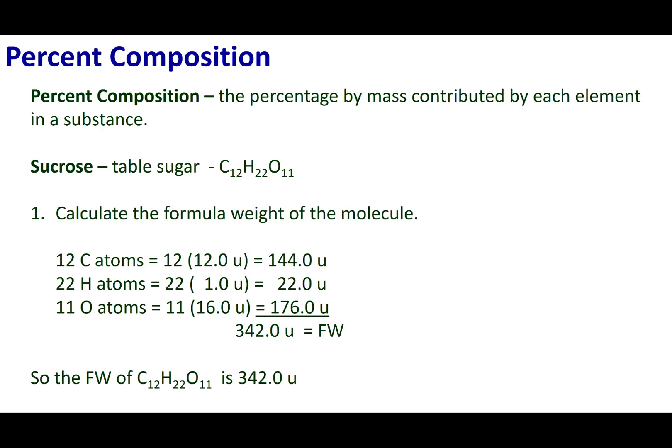Let's go ahead and do a similar calculation using a chemical compound. So let's start out with table sugar. Table sugar is C12H22O11. So the first thing I want to do with percent composition is I want to calculate the formula weight. So what I have here are 12 carbons, 22 hydrogens, and 11 oxygens.